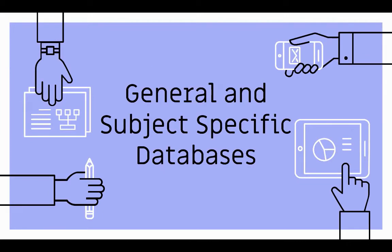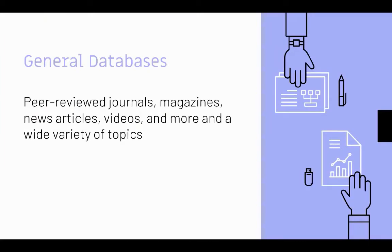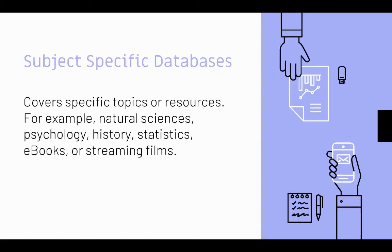There are basically two types of databases: general and subject-specific. General databases have resources on a variety of topics. Subject-specific databases have material covering specific topics or a specific type of resource, such as natural sciences, medicine, psychology, statistics, or streaming films.